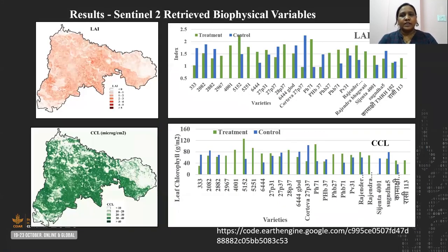Here I present the results of Sentinel-2. We tried retrieving data from Sentinel-2, but we have only one cloud-free image acquired on 30th August. Using this image, we developed five biophysical variables: leaf area index, chlorophyll content, vegetation cover, crop water content, and photosynthetically active radiation. In this graph, you can see the variation in parameters for different varieties and between the treatment and the control plots. But this could not be ascertained as we don't have any ground-truth data at this point, which can only be made available at the end of the season.